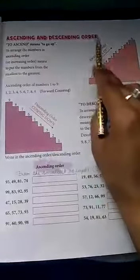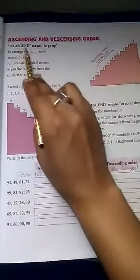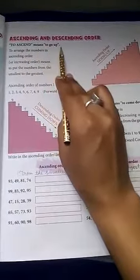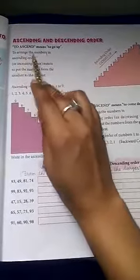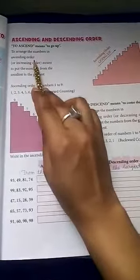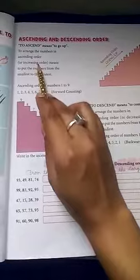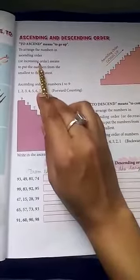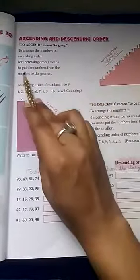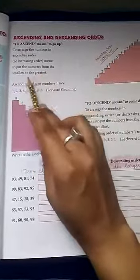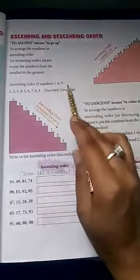Ascending and descending order. To ascend means to go up. To arrange numbers in ascending order or increasing order—both are the same—means to put the numbers from the smallest to the greatest.